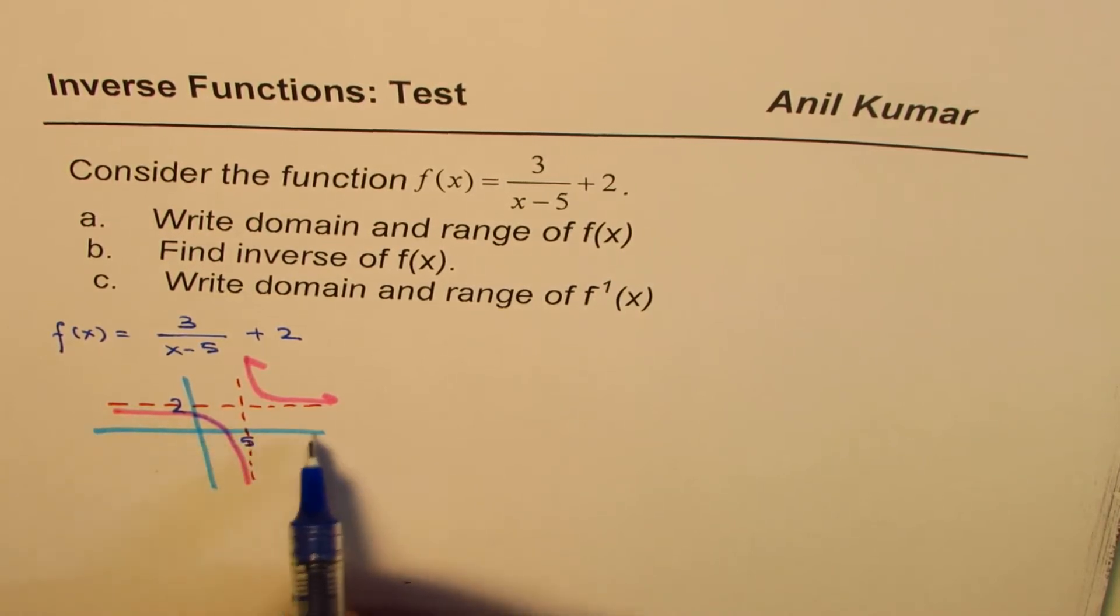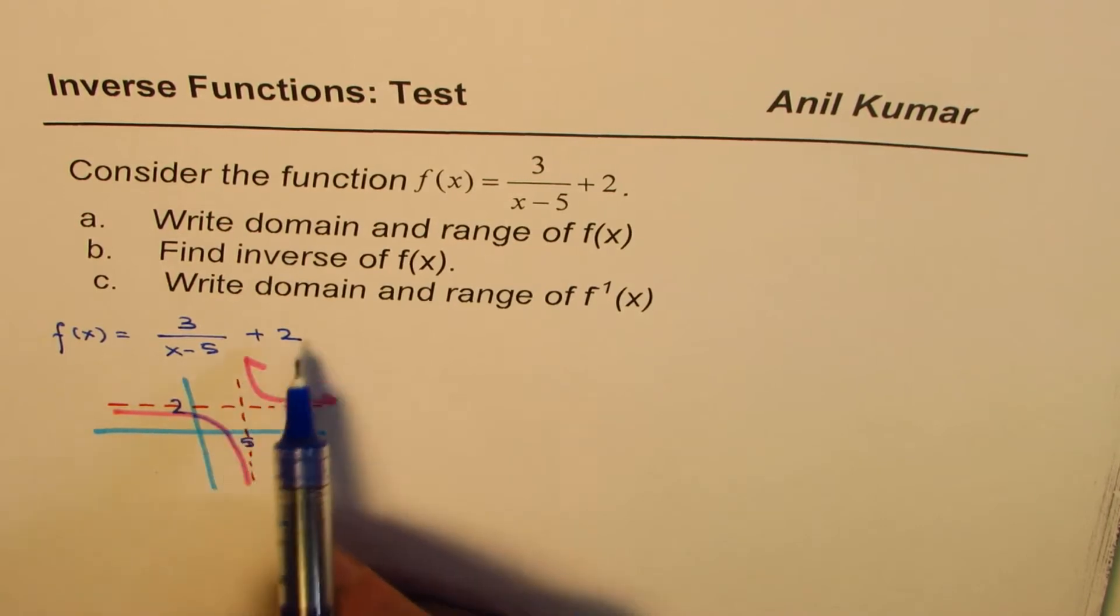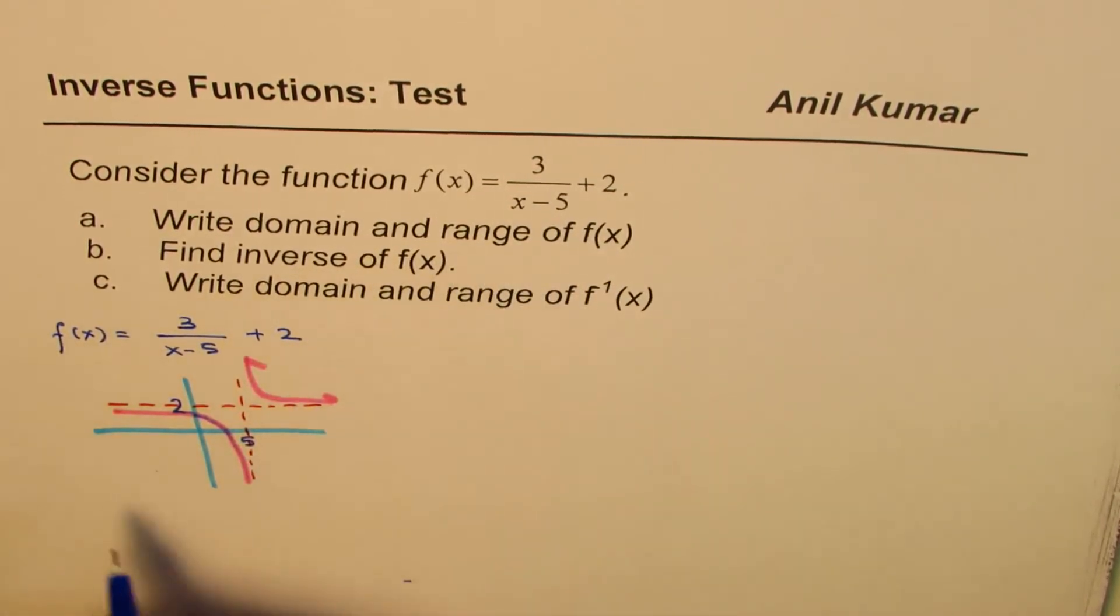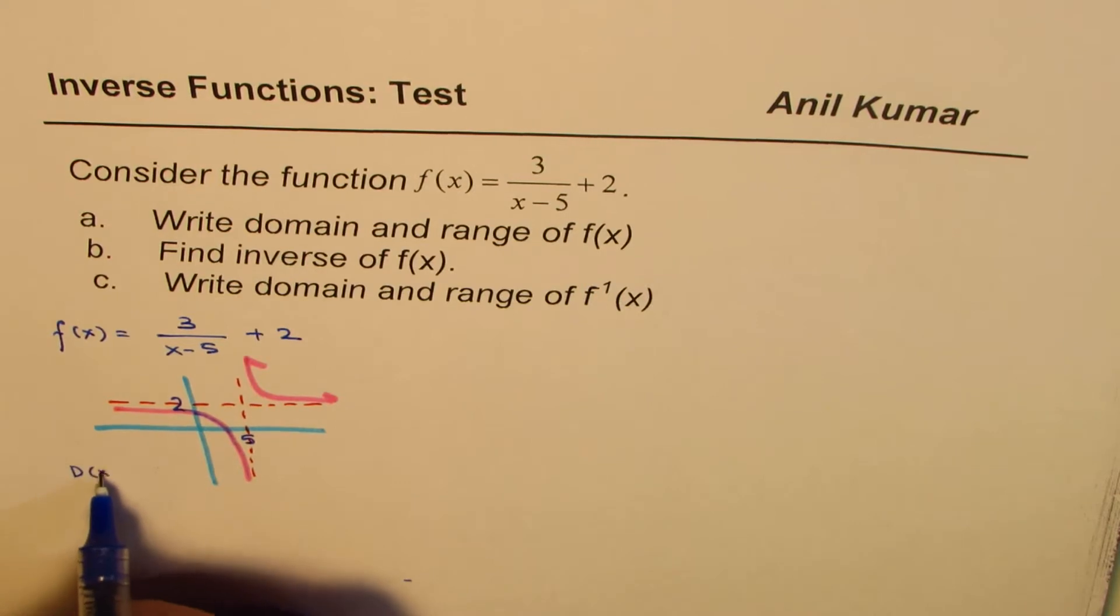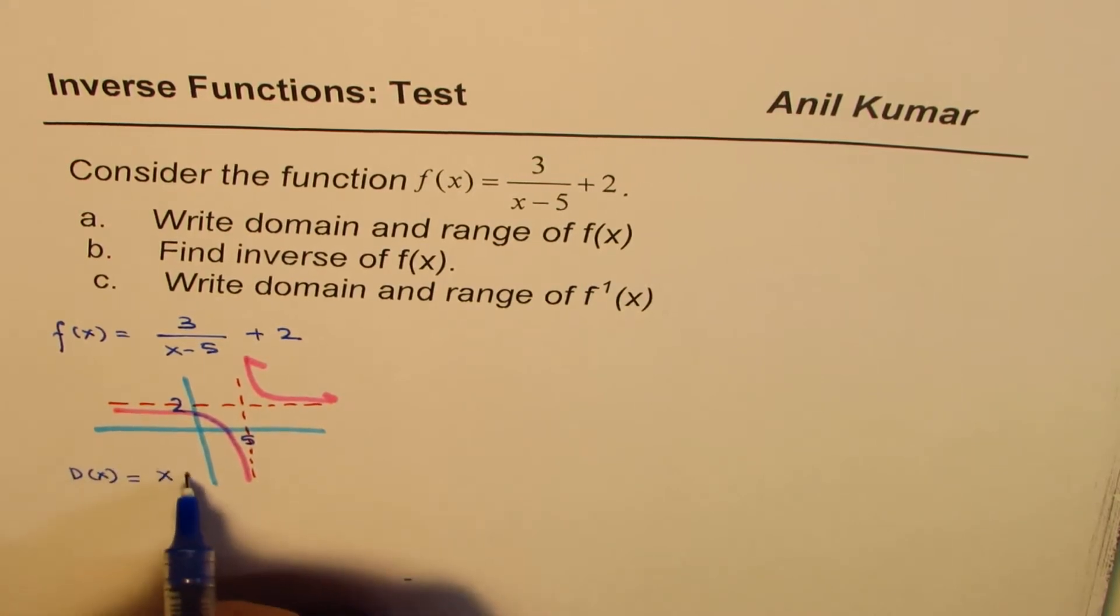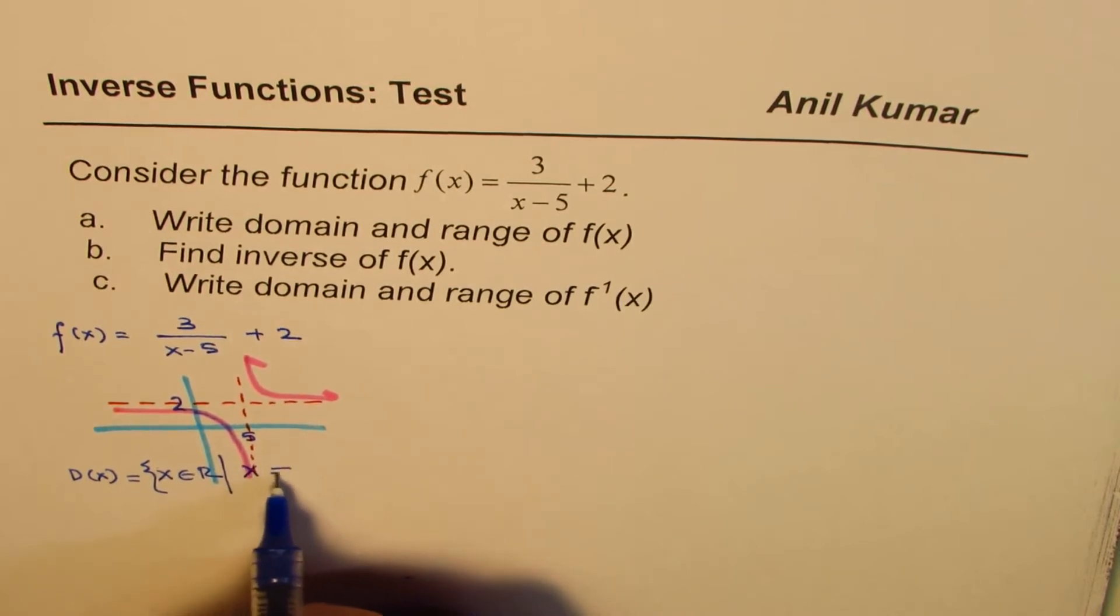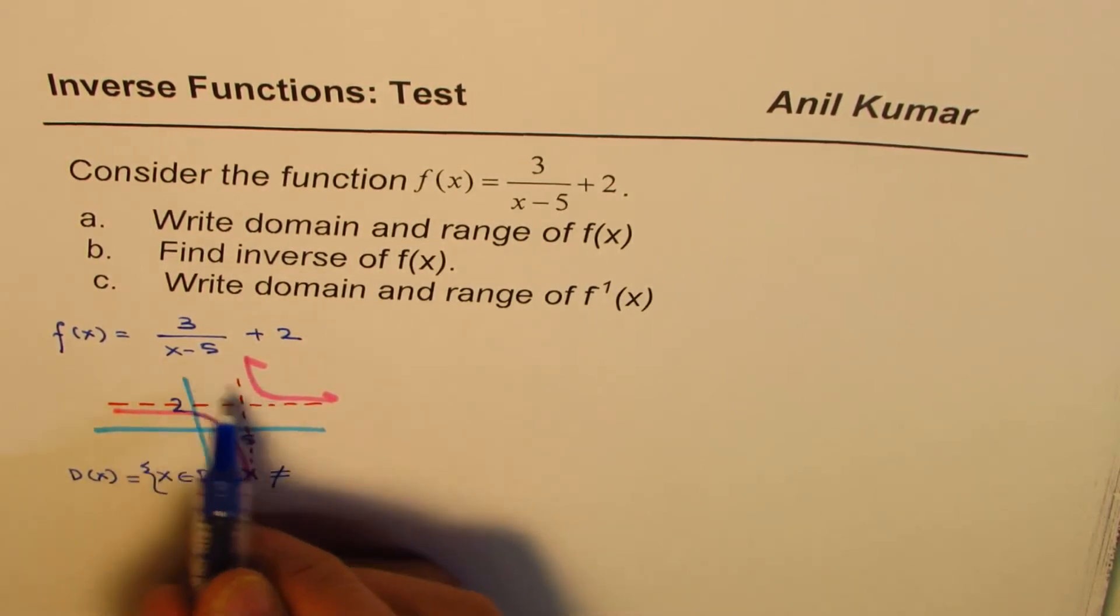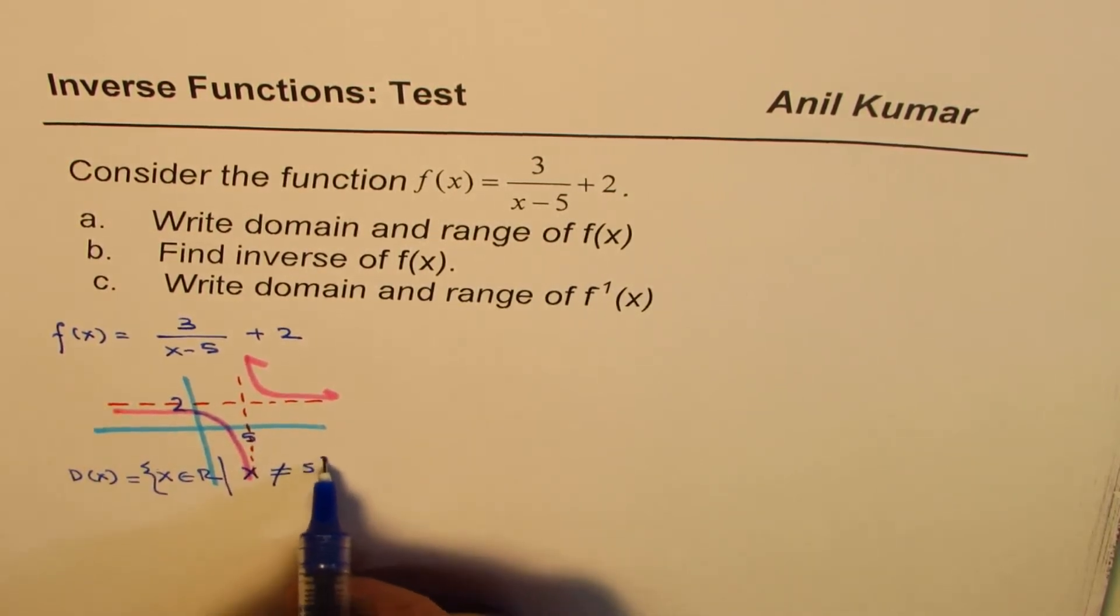So it's very easy from this type of a graph or by transformations to write down domain and range for this function. So let me write down domain and range of the function now. So domain is x belongs to real numbers, where x is not equal to the vertical asymptote, which is 5.